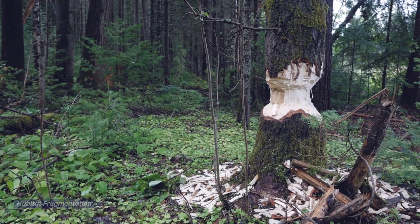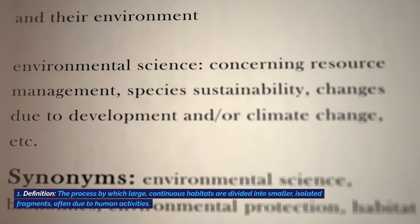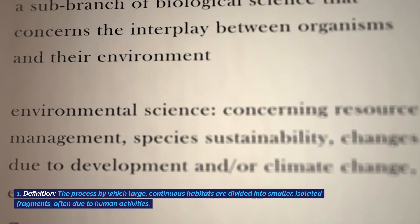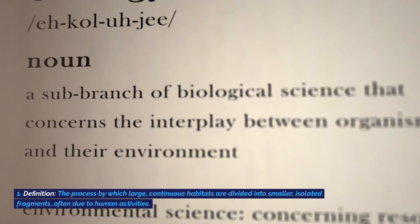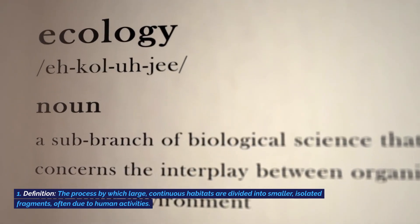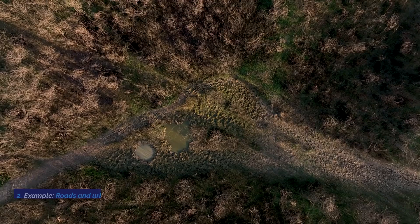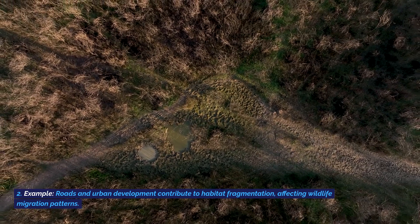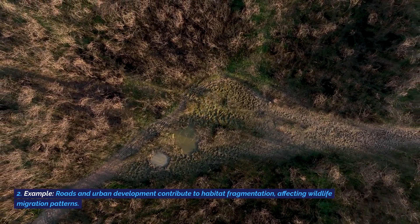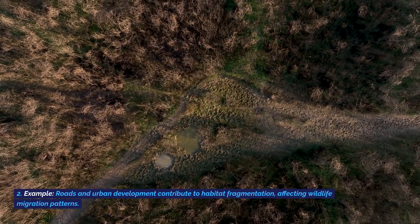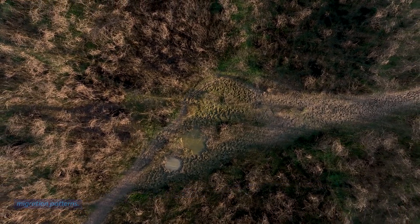Habitat fragmentation: the process by which large, continuous habitats are divided into smaller, isolated fragments, often due to human activities. Example: Roads and urban development contribute to habitat fragmentation, affecting wildlife migration patterns.